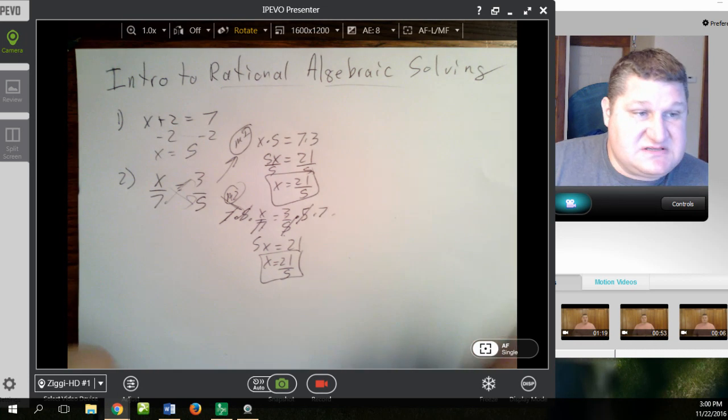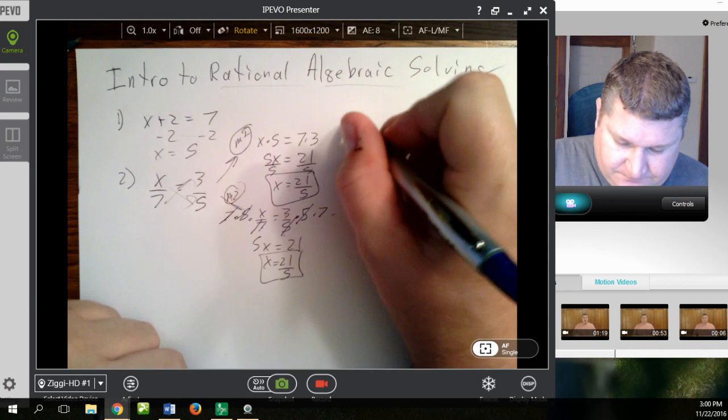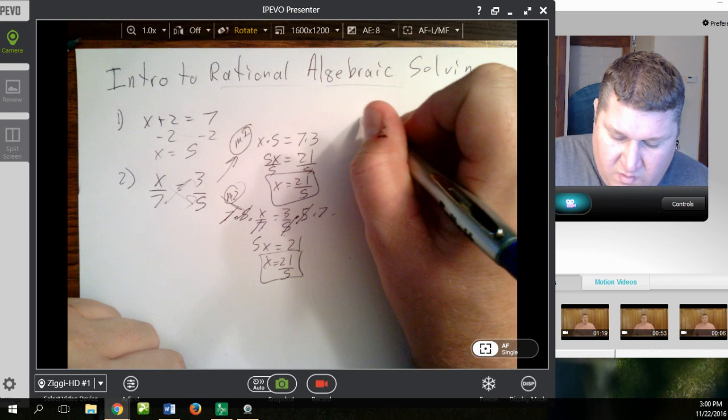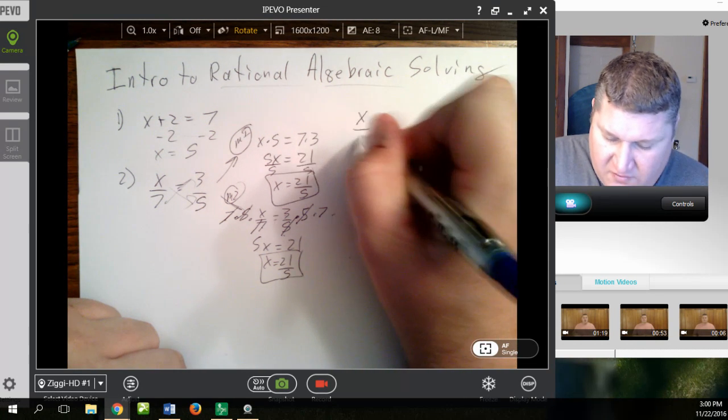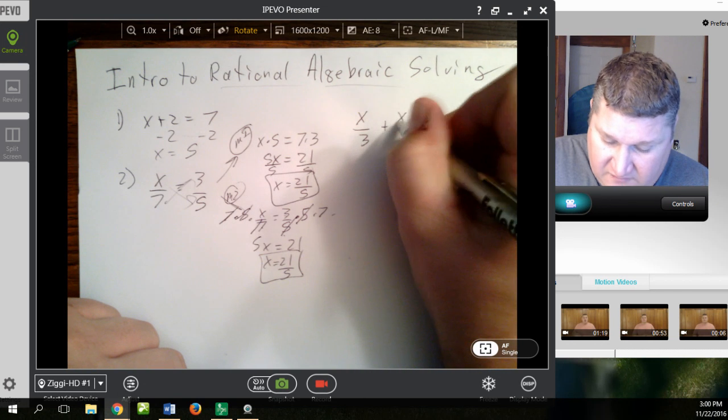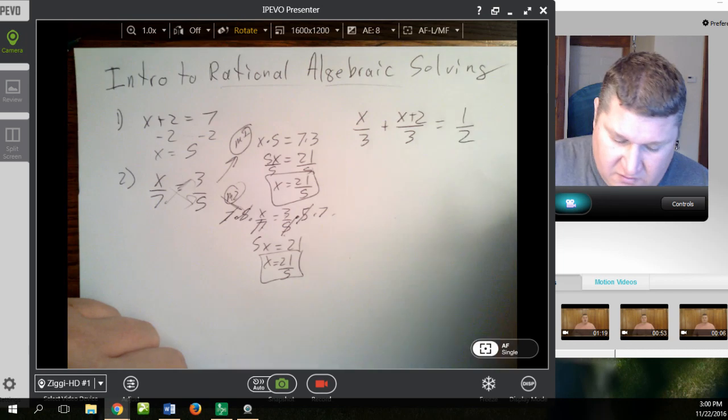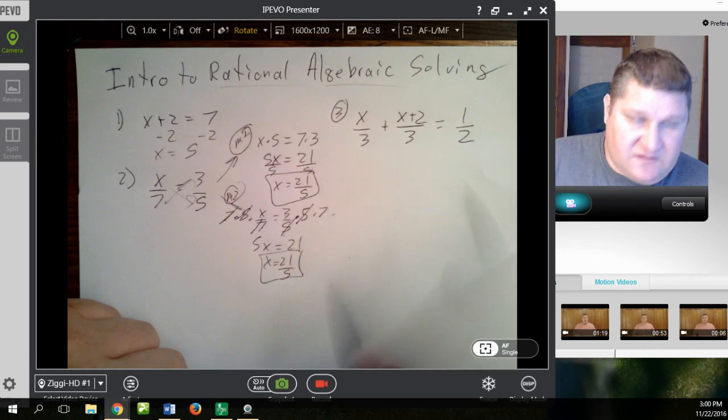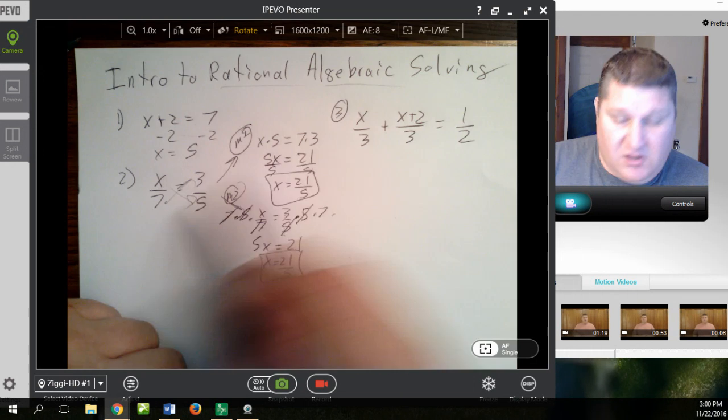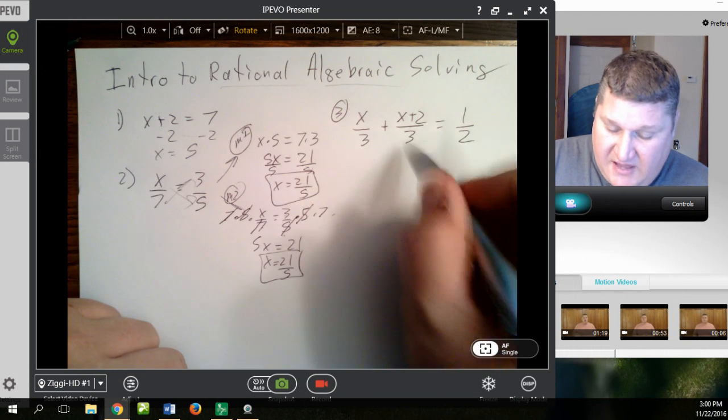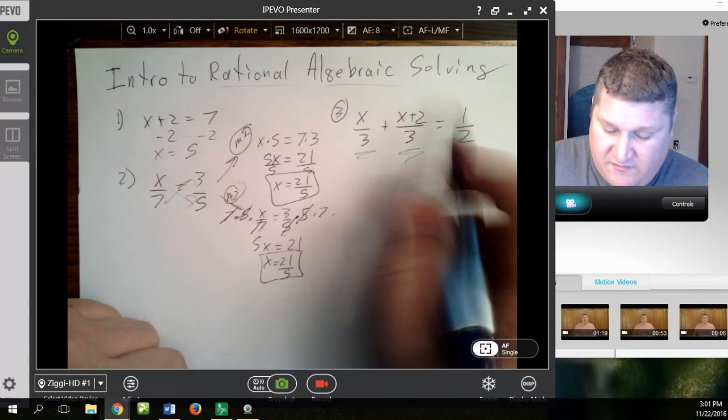Now, let's move on to something a bit more challenging. Let's do something where it is x over 3 plus x plus 2 over 3 equals 1 over 2. So let's make this problem number 3. Now, in this case, we can't just cross-multiply because I have two whole fractions over here.